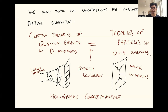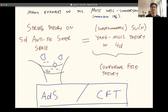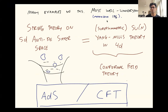So this is holographic duality. It's a duality between two very different looking systems, and there are by now many examples of this. This was first understood in this precise form by Juan Maldacena in 1996, and I'll tell you about the most well-understood example of it.